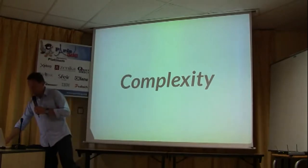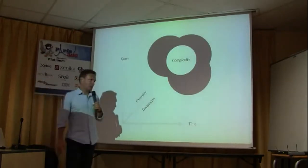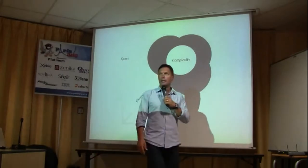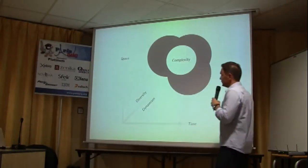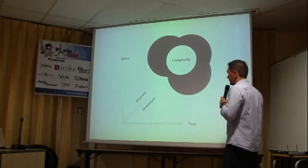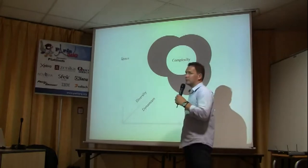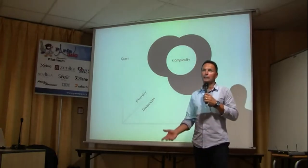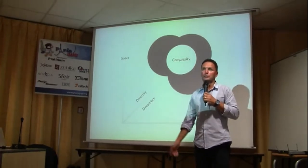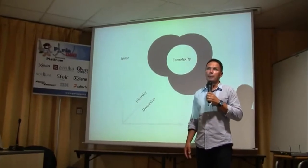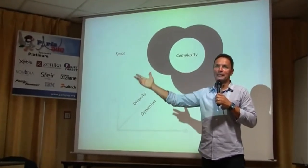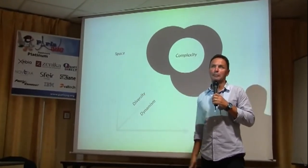We're going to touch on complexity. In the context of the cloud, there are two dimensions that we have to consider: space and time. Space — think of it like the state space or the resource space — basically the size, our capacity itself within the application.